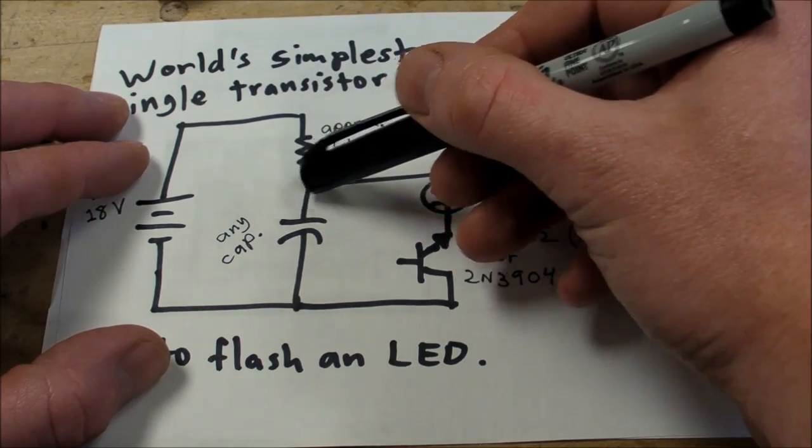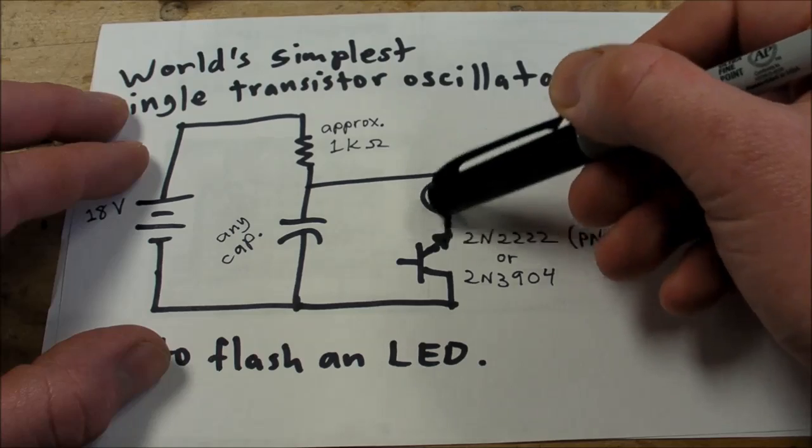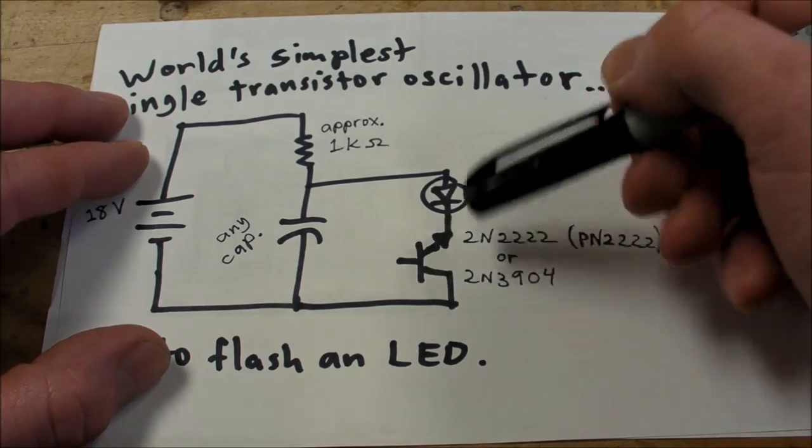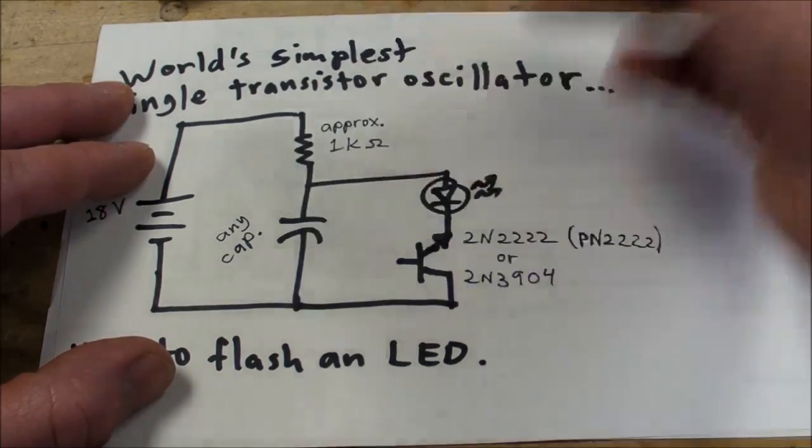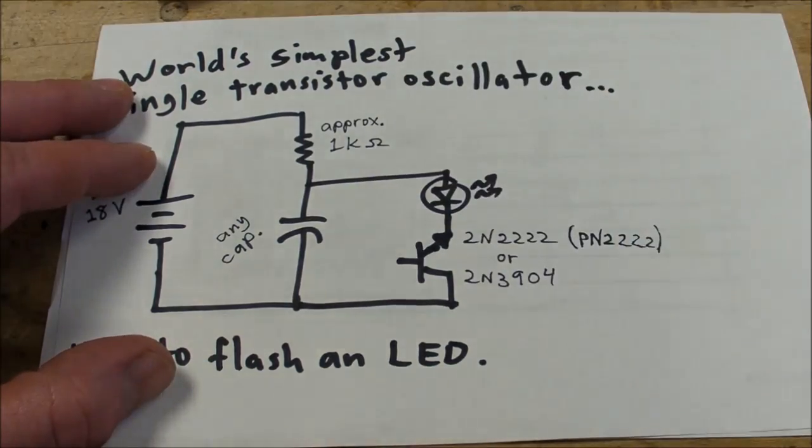The capacitor just drains a whole bunch of charge through the LED and through the transistor into ground, until finally it just stops conducting. And then the cap charges again and the cycle continues. And you can use that to make a sawtooth wave.